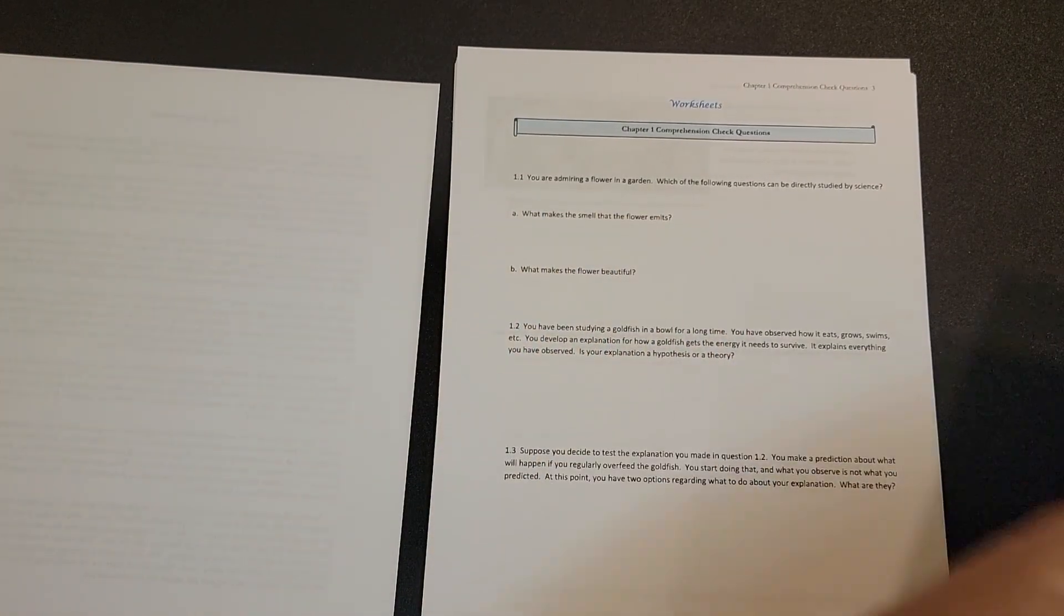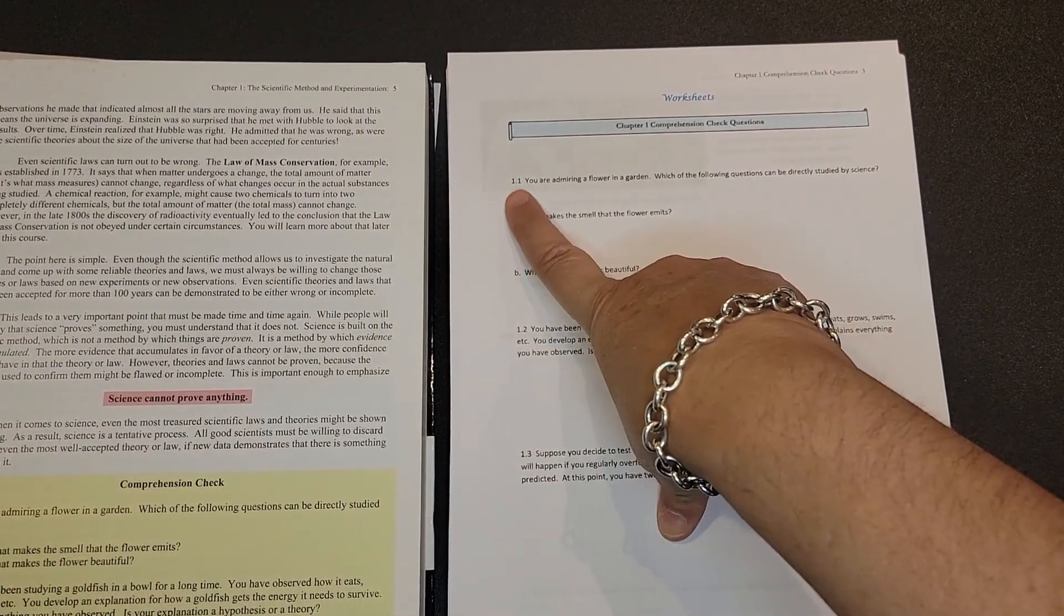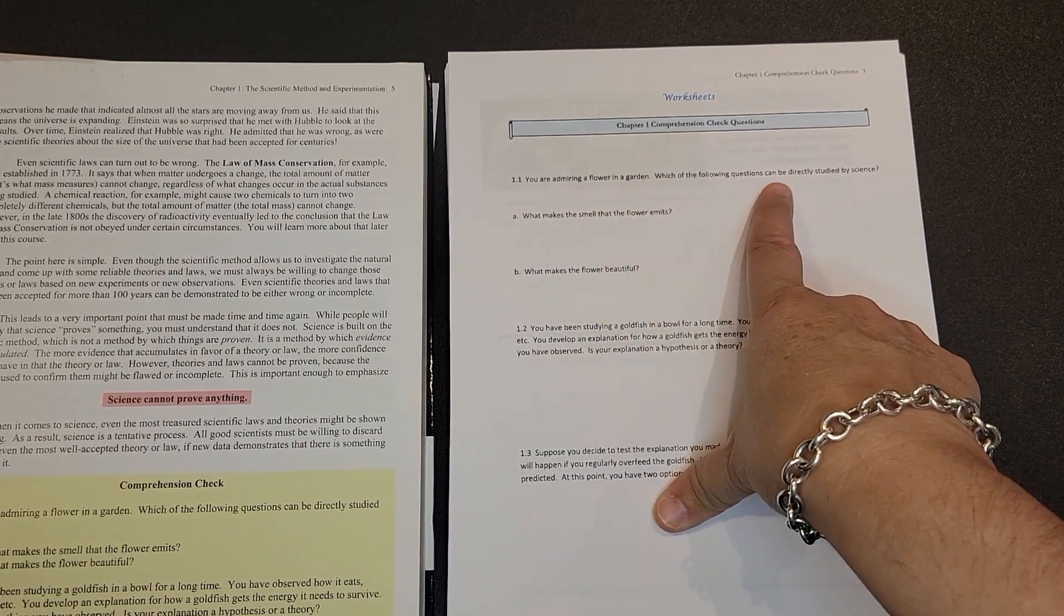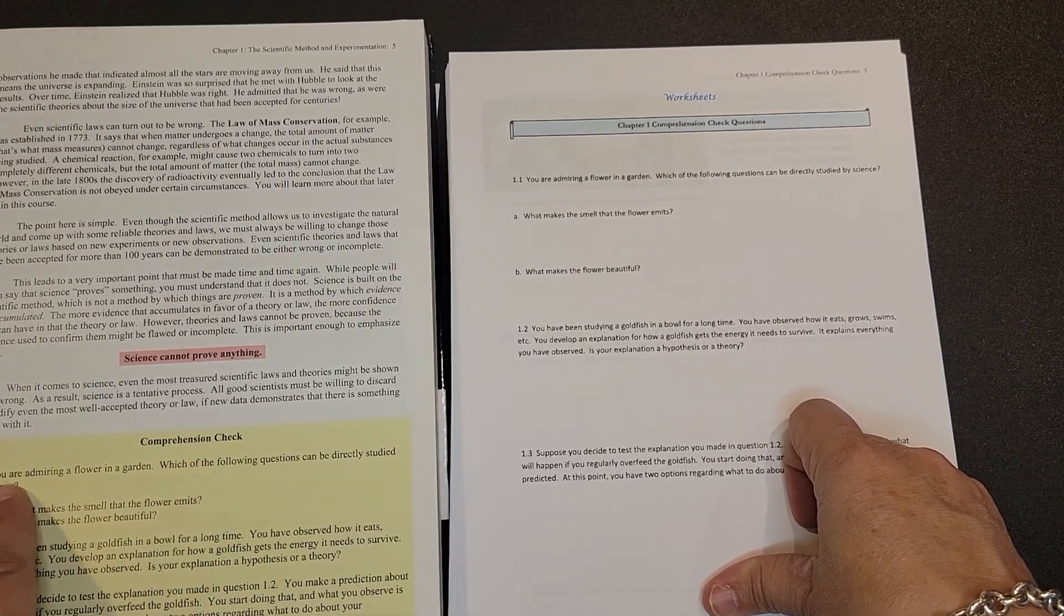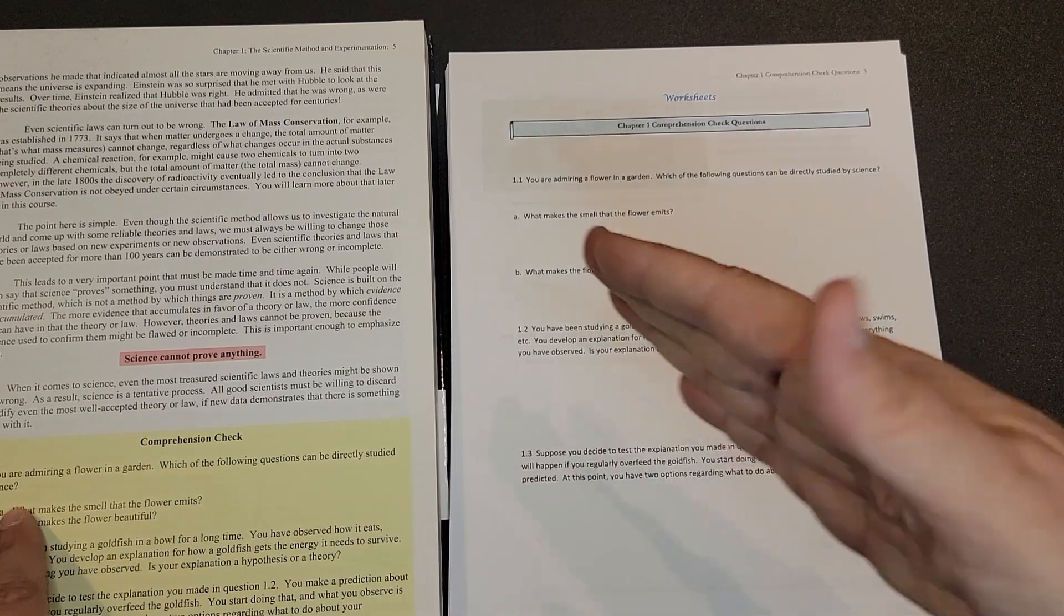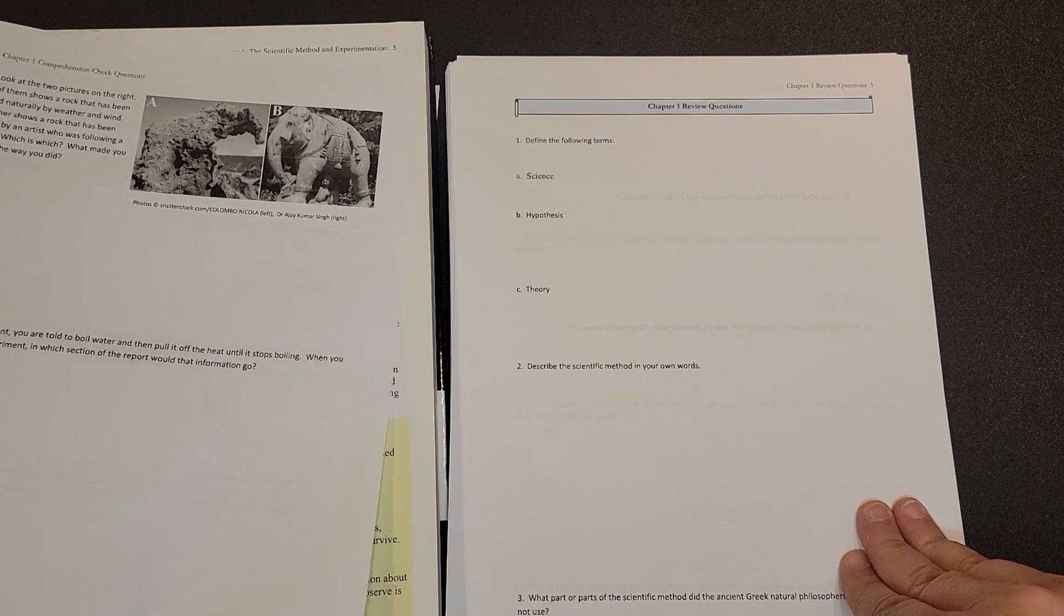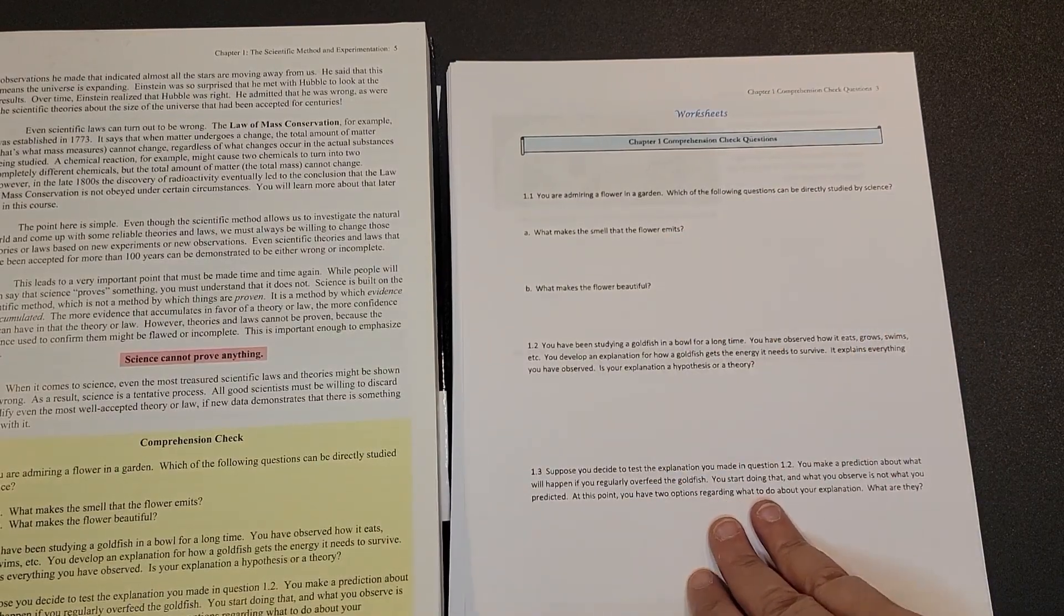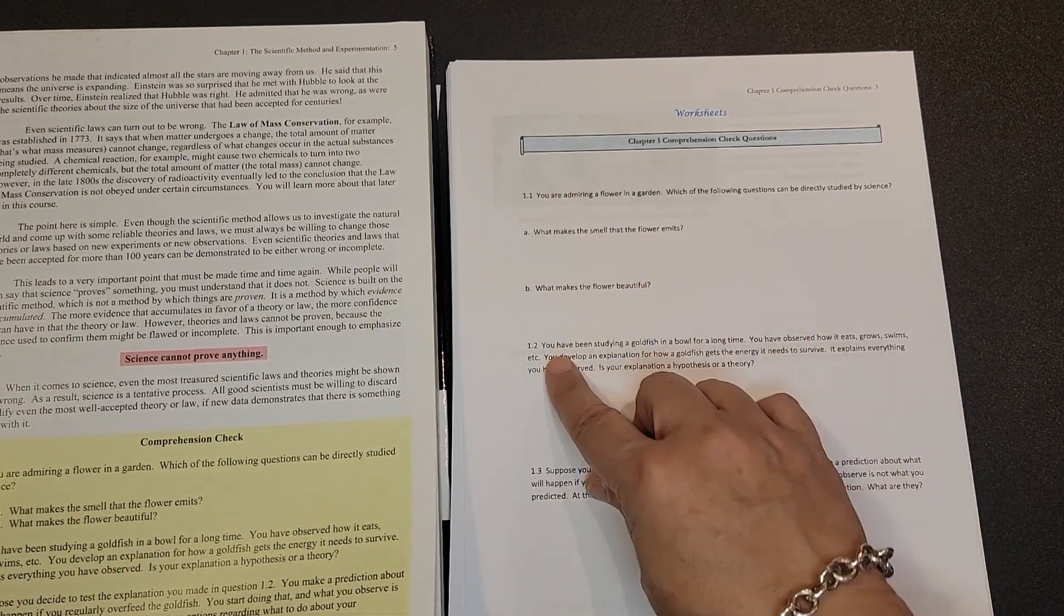So next in this workbook are the worksheets. Well, the worksheets are really these comprehension check questions. So you can see question 1.1: you're admiring a flower garden, which of the following questions can be directly studied by science? So in comprehension check 1.1, you're admiring a flower garden, which of the following questions can directly be studied by science? So this really is a place for your student to be able to write out the answers for these comprehension check questions. The questions in the worksheet are separated by chapter, not necessarily by page. So you can see we have 1.1, 1.2, and 1.3 here.